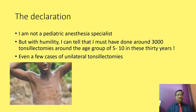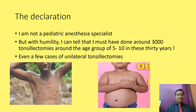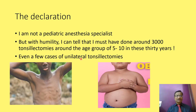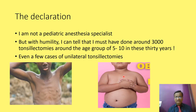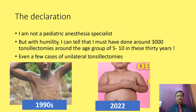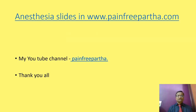In the 1990s, patients came for adenotonsillectomy with recurrent respiratory infections and failure to thrive — post-tonsillectomy they would gain weight, going from 30 to 36 kg. Nowadays patients come with adenotonsillitis causing OSA, which leads to obesity, which in turn worsens OSA. Once the adenotonsillectomy is performed, this cycle resolves. This is the gross difference between the 1990s and 2020. Thank you very much — my slides are available at painfreepartha.com.